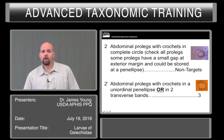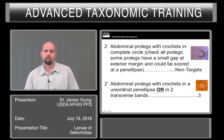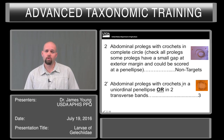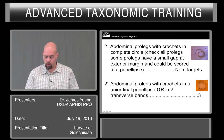You should also look at the abdominal prolegs to see how the crochets are arranged. If the abdominal prolegs have the crochets in a complete circle, it is not one of the targets we're looking at. If the abdominal prolegs have crochets in a uniordinal ellipse or in two bands, you should continue with the key.